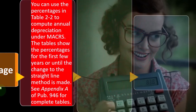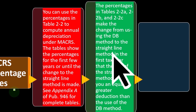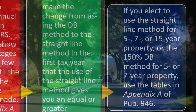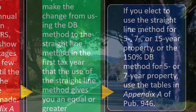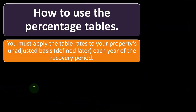See Appendix A of Publication 946 for complete tables. The percentages in Tables 2-2A, 2-2B, and 2-2C make the change from using the DB method to the straight-line method in the first tax year that the straight-line method gives an equal or greater deduction. Usually software will help us, but the tables could help us easily calculate projections out into the future.